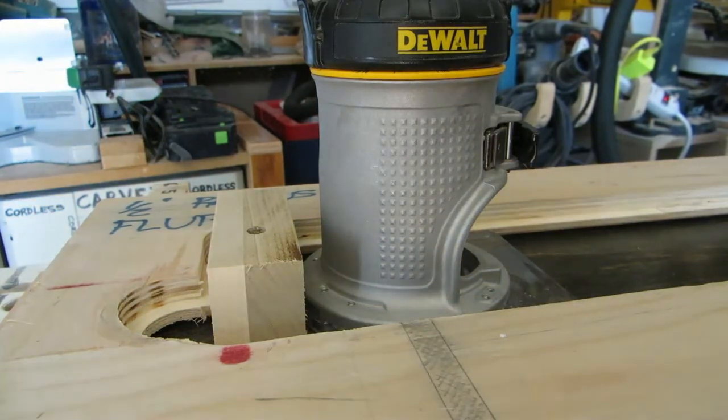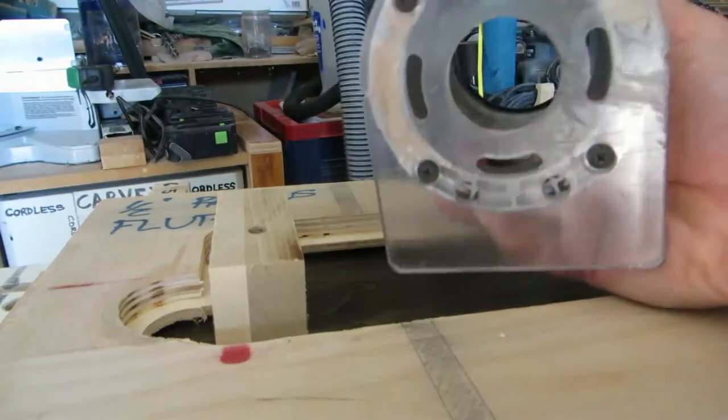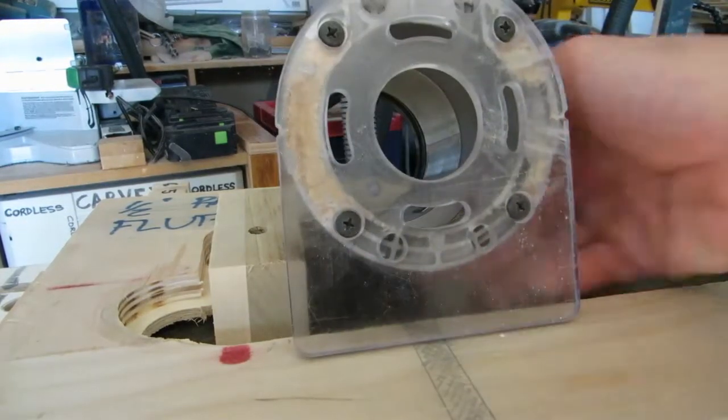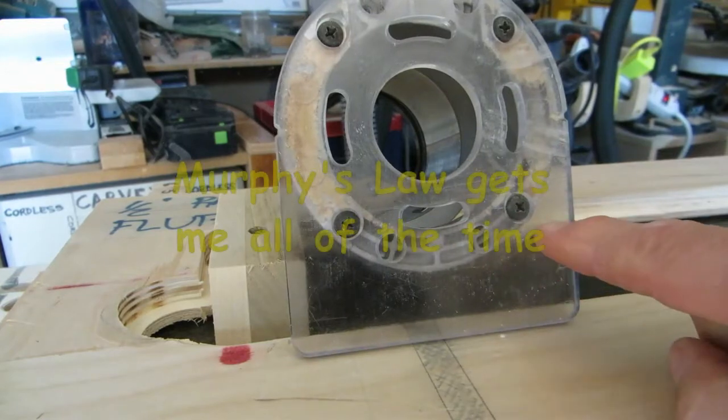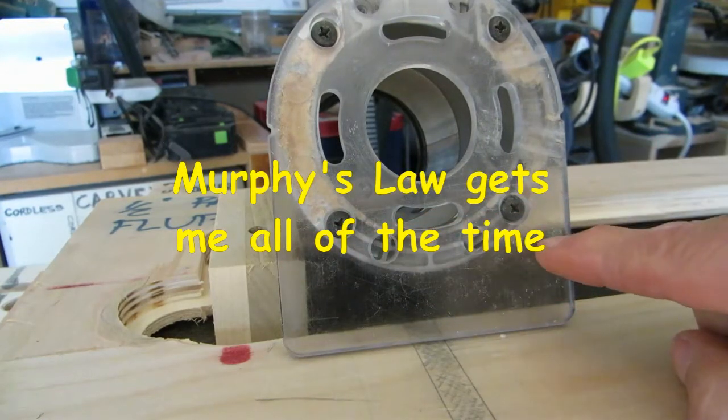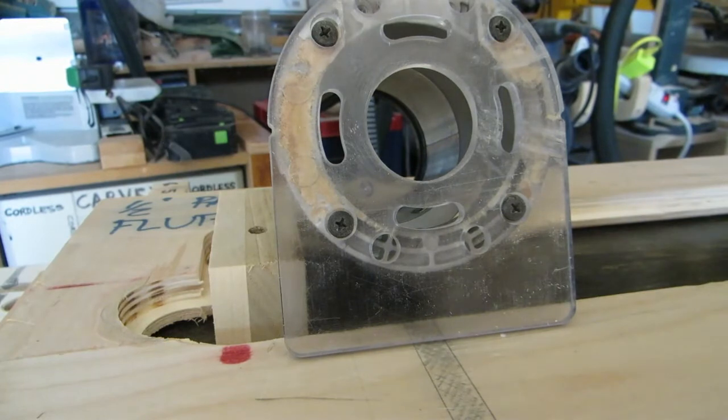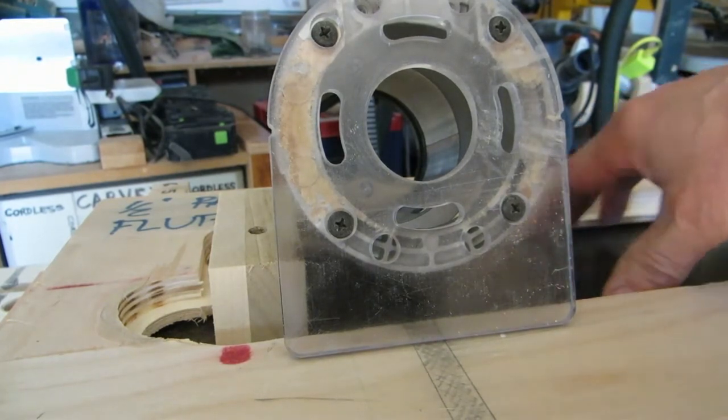So what I decided to do is go with the plunge router base. And when I put that in, what I found is that the base of the router was not four inches across like this one. It was about four and a half, four and three eighths, something like that. So this jig would not work. The router base would not fit in this four inch gap here.